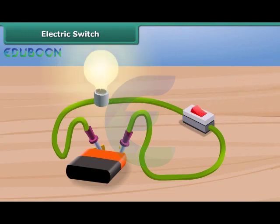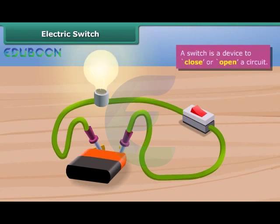The current flows through the circuit and the bulb starts glowing. A switch is a device to close or open a circuit.